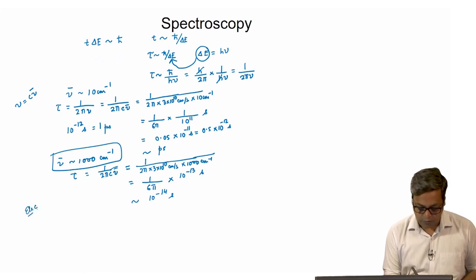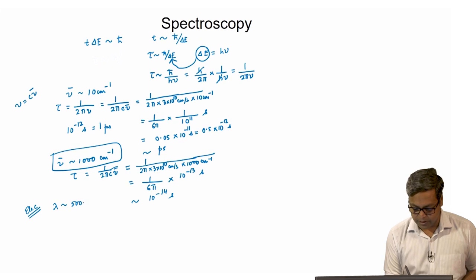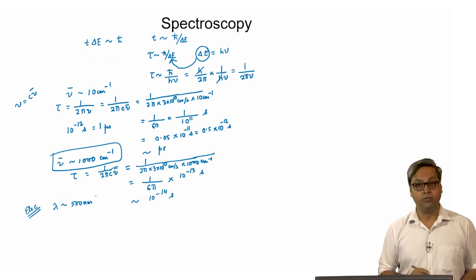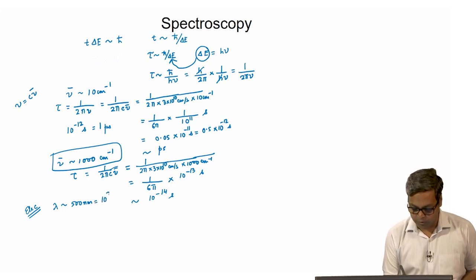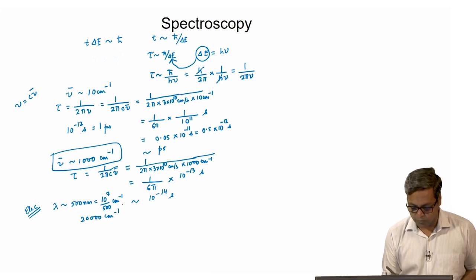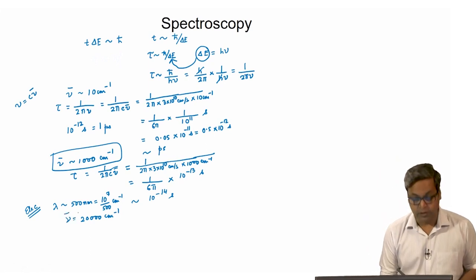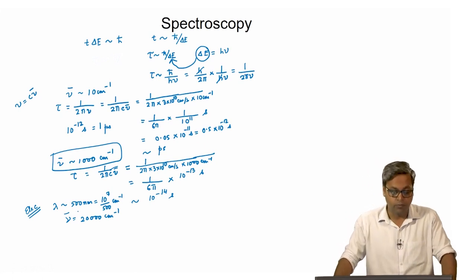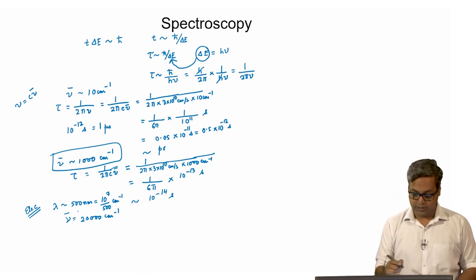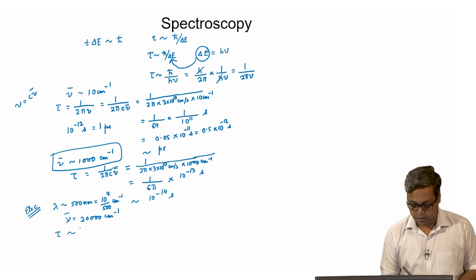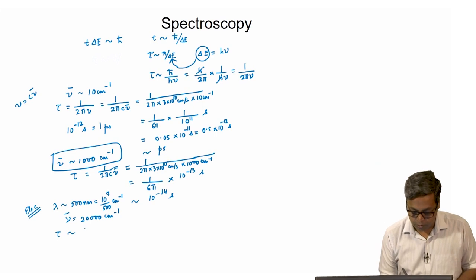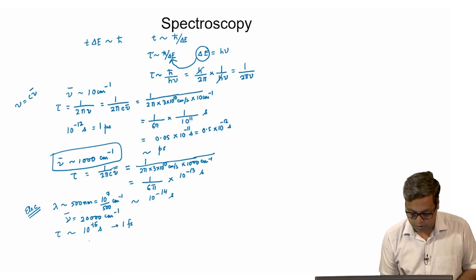Now let us look into the electronic transition. For the electronic transition, let us say lambda is 500 nanometers. Converting this to wave numbers, this is equivalent to 10 to the power 7 by 500 wave numbers, which is 20,000 wave numbers. So the wave number for an electronic transition is 20 times more compared to the wave number for a vibrational transition. If we do the same calculation of time scale, we get the time scale for electronic transition to be of the order of 10 to the power minus 15 seconds, that is 1 femtosecond, because 10 to the power minus 15 seconds equals 1 femtosecond.